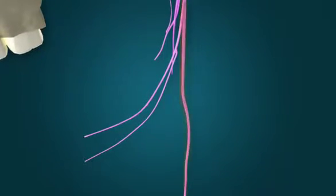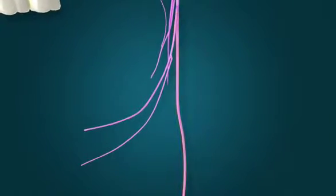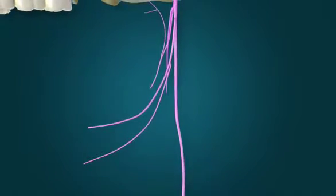The vagus nerve courses inferiorly toward the thorax and the abdomen. It gives off branches that are not shown in this video.